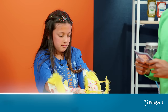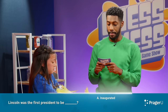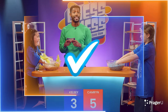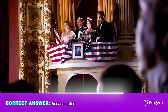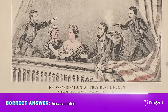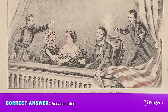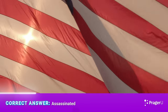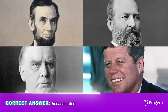Next question is for Kelsey. Lincoln was the first president to be what? A. Inaugurated. B. Impeached. Or C. Assassinated. C. Assassinated. That is correct. On April 14, 1865, less than one week after the Civil War ended, John Wilkes Booth shot Lincoln at Ford's Theater during a performance of the play Our American Cousin. Lincoln died the next day, the first president to be assassinated. To date, a total of four presidents — Lincoln, James Garfield, William McKinley, and John F. Kennedy — have been assassinated.